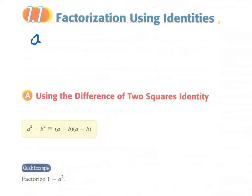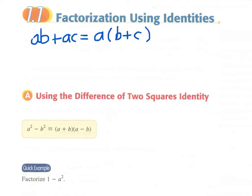Let's say we have an expression like a times b plus a times c. We have a common factor of a here, and then we can just take it out and write it as a times (b plus c). We call this method taking out the common factor.